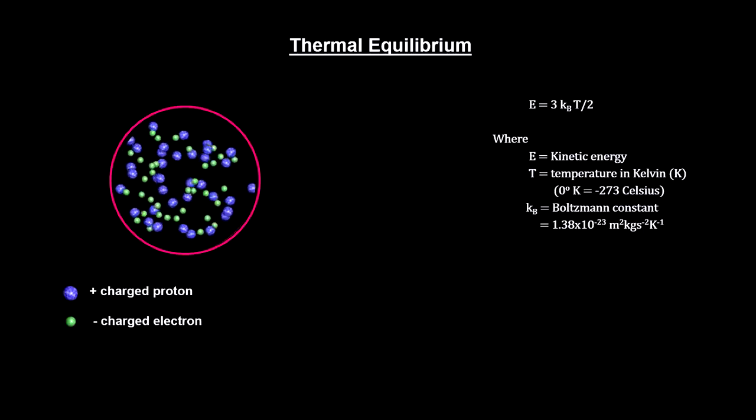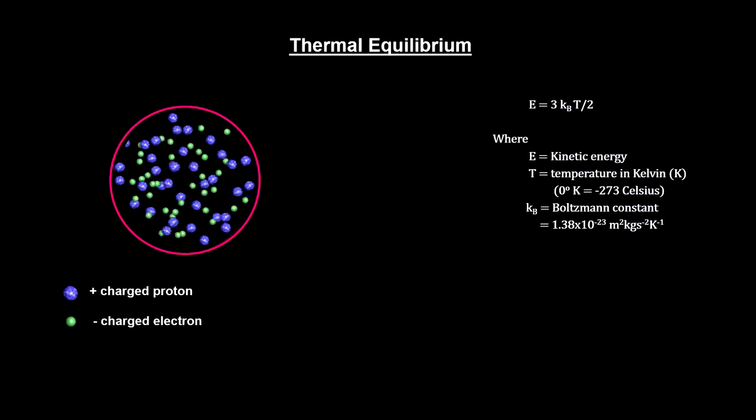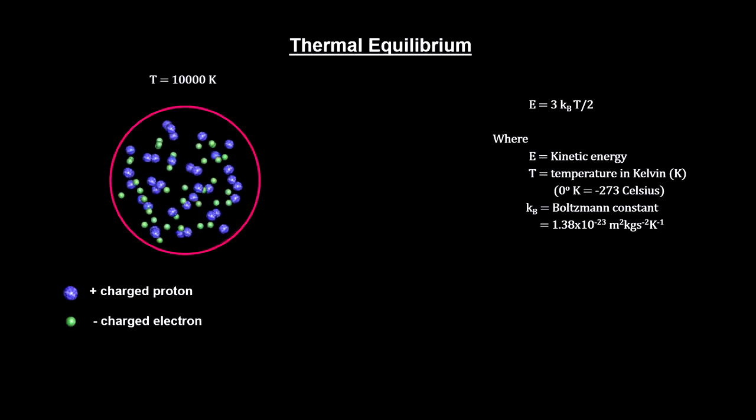In this example, we have a small volume of protons and electrons in thermal equilibrium at 10,000 degrees Kelvin, the temperature at the surface of our sun.